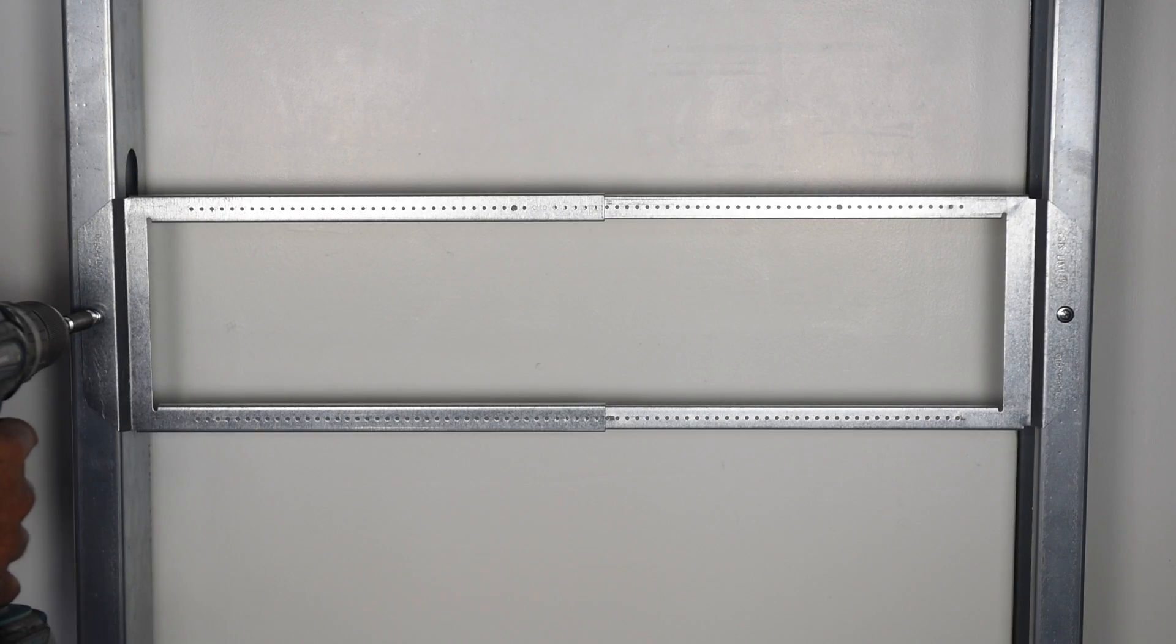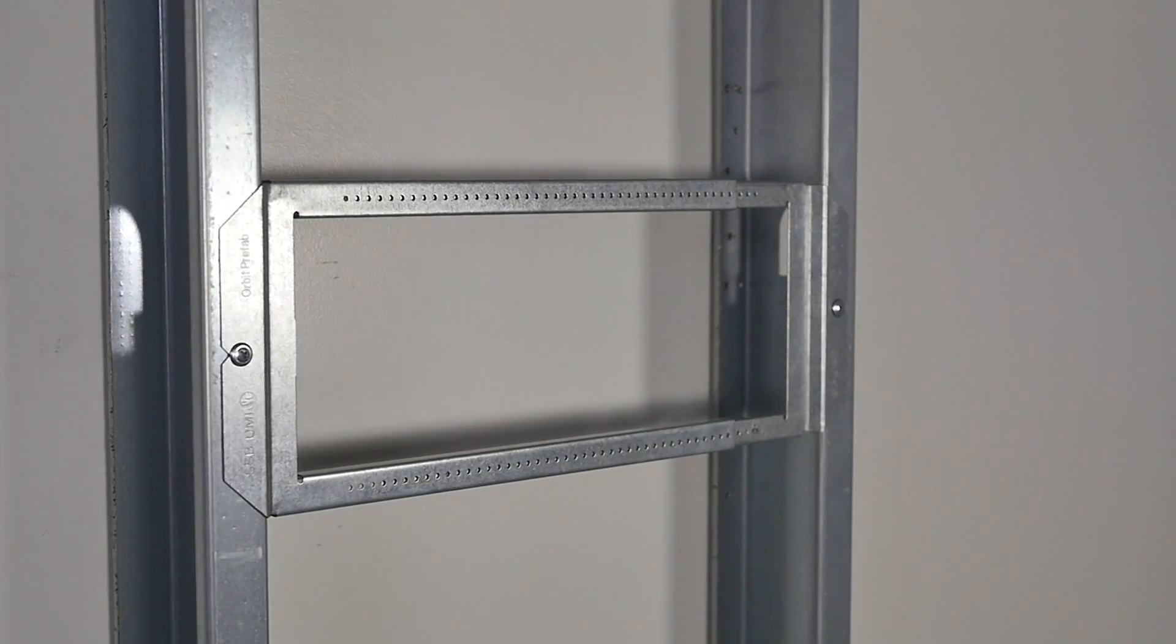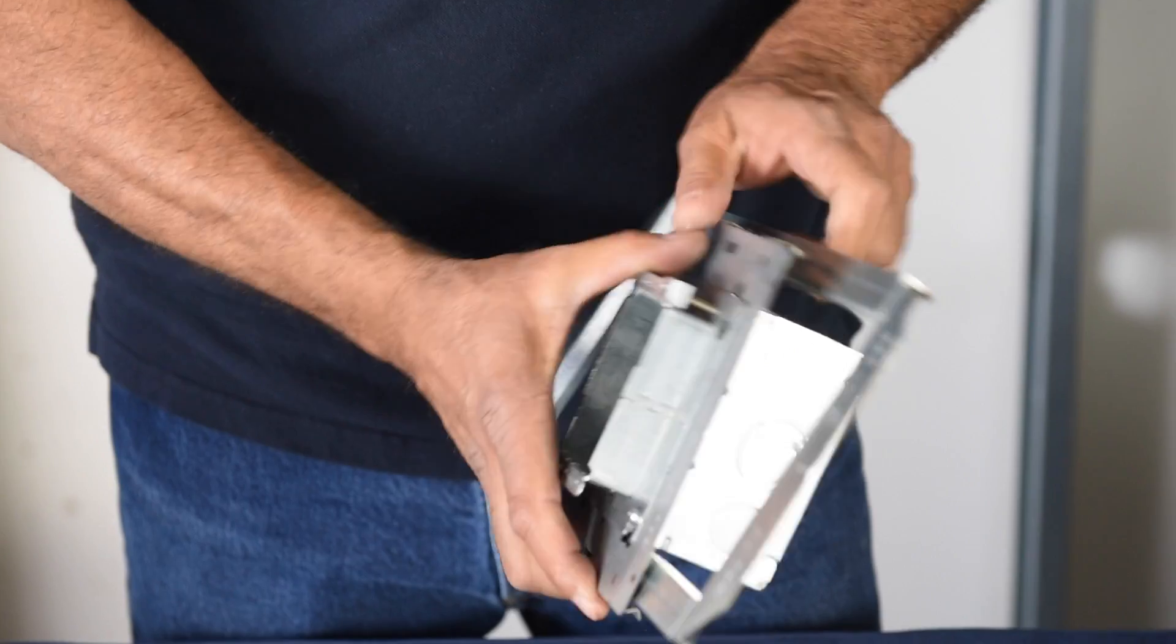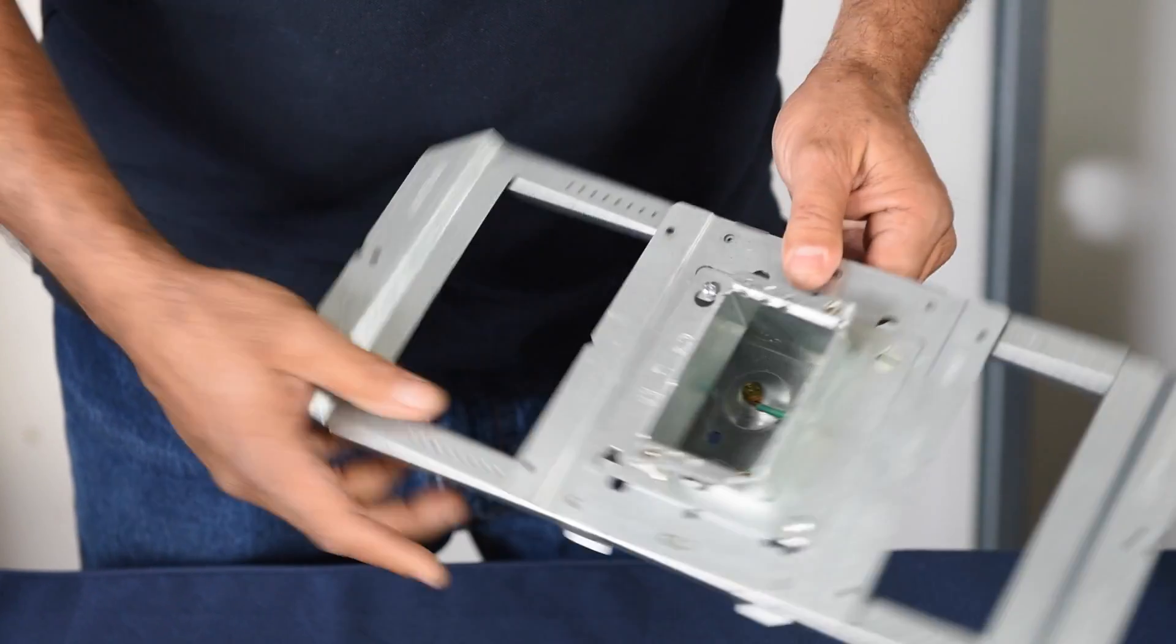Installation of the SSB onto studs is quick and allows for easy prefabrication. The junction boxes and rings can be pre-assembled to the UMA and then installed onto the SSB in a controlled environment.